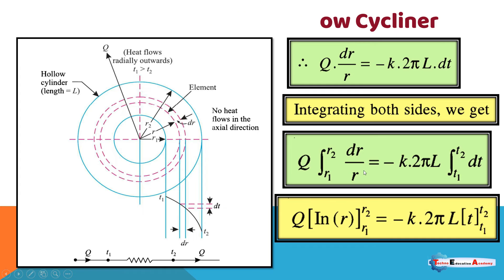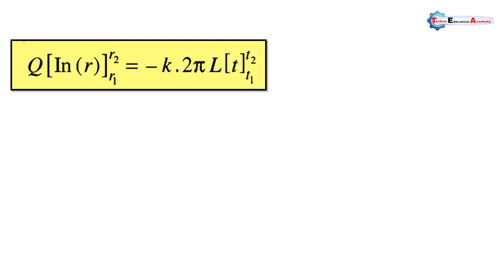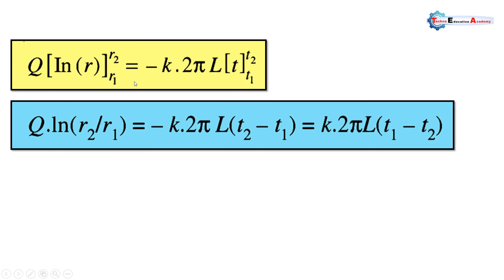The integration of 1/r is ln(r), evaluated from r1 to r2. Applying the upper and lower limits, we get ln(r2) minus ln(r1). As per the fundamentals of mathematics, the subtraction of logs can be written in ratio form.